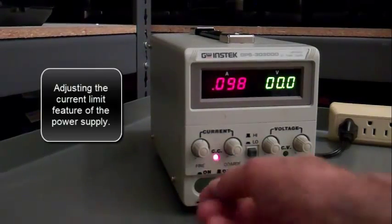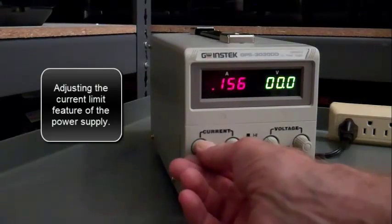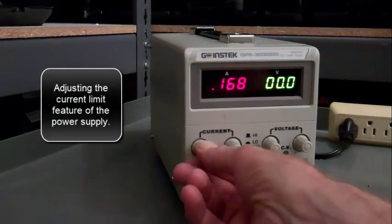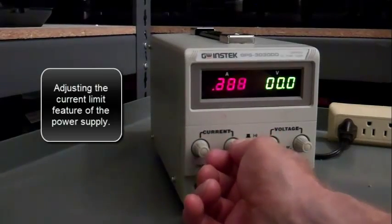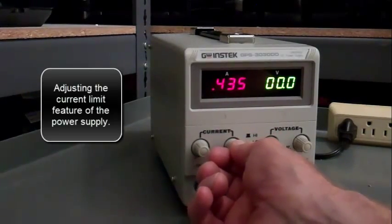When the current limit light is on, it means that the current limit can be set. I want to set the current limit to 500 milliamps.